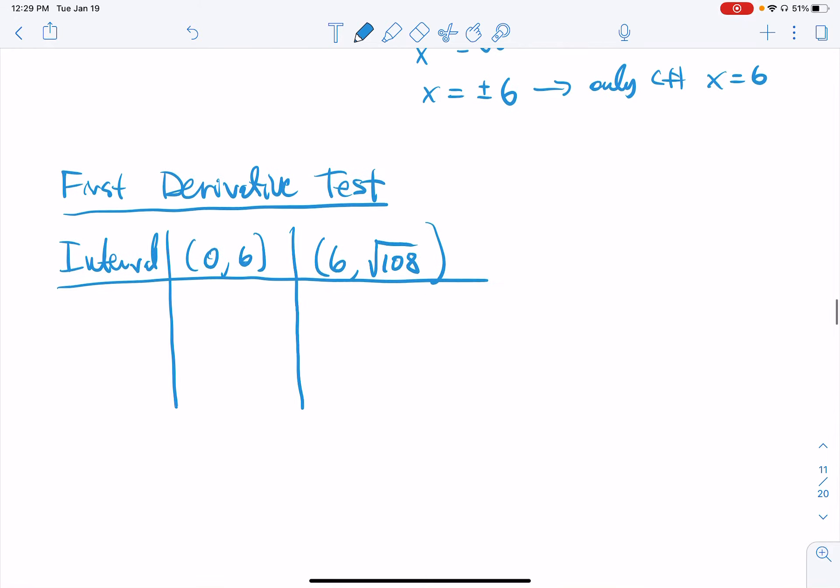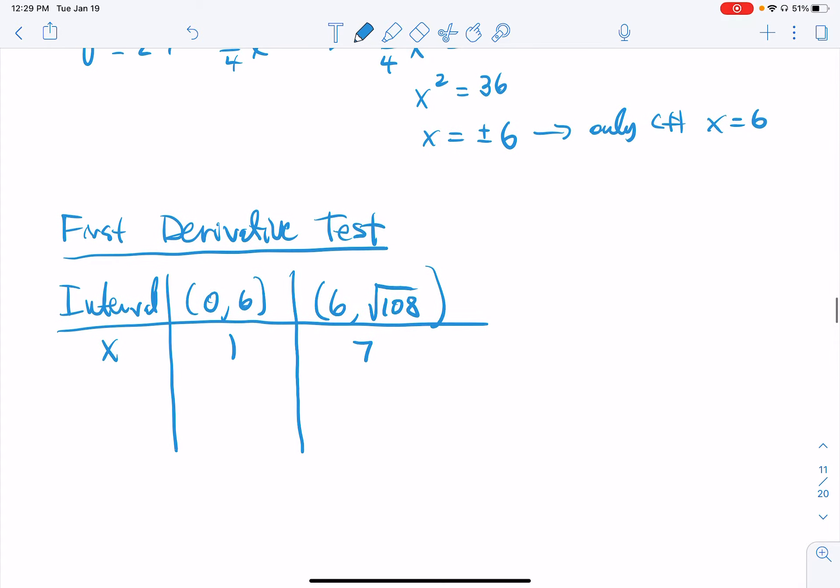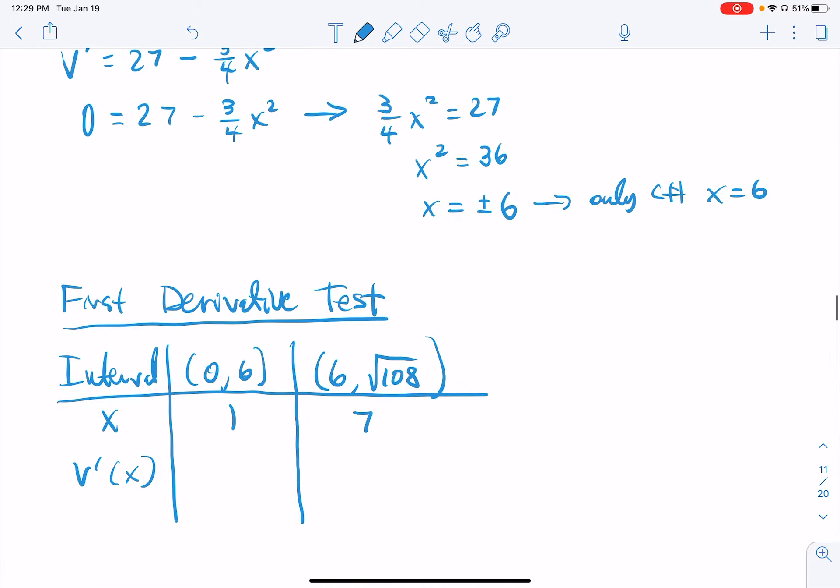And then our second interval is from 6 to the square root of 108, 10-ish. And let's pick some test values in here, like 1 and maybe 7, something along those lines. And then where do those go? It is the first derivative test, so it makes sense that it goes into v prime of x. And we only care about the sign. Is it positive? Is it negative? What's going on here?